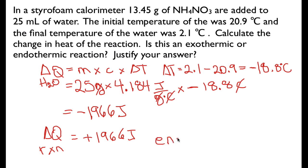By definition, if the change in energy for the reaction is positive, this must be an endothermic reaction. So the first example was exothermic because delta Q for the reaction was negative. In this case, the water lost energy, which means the reaction gained energy, and a reaction that gains energy is by definition endothermic. Those are the two types. I hope that was helpful, and thank you very much for watching.